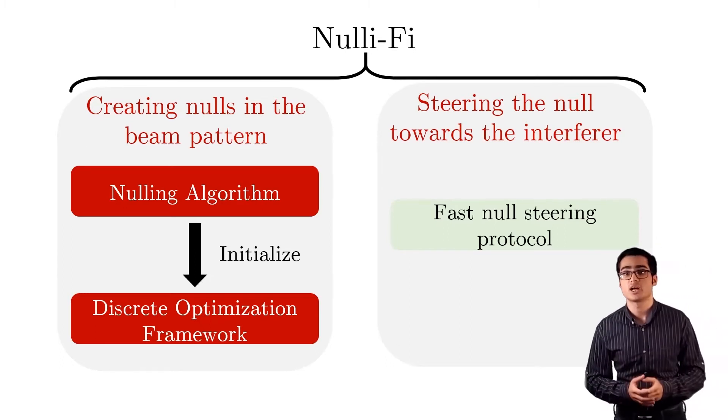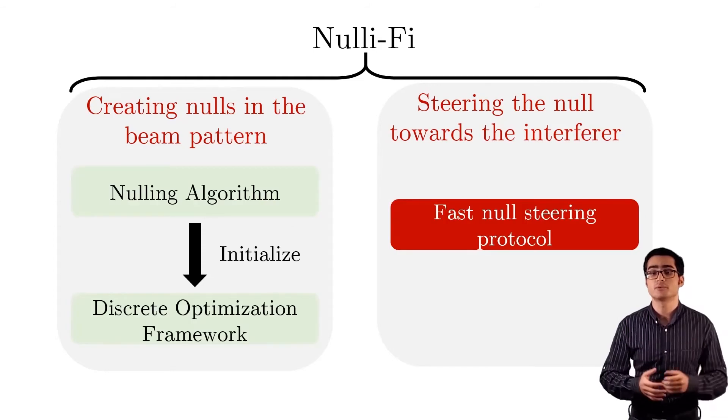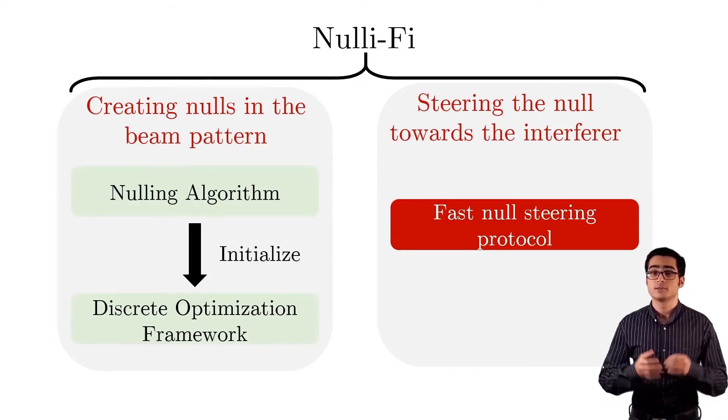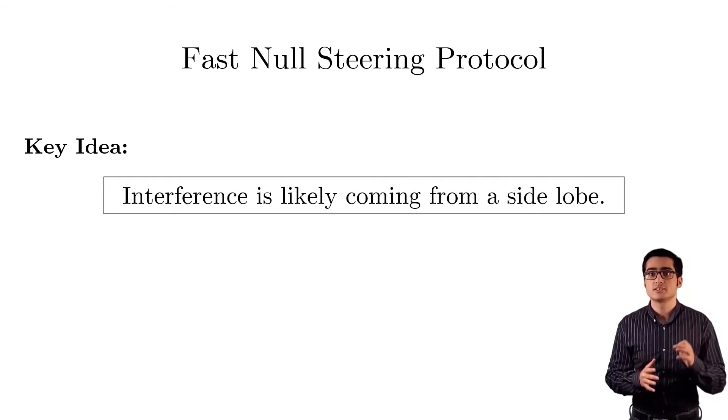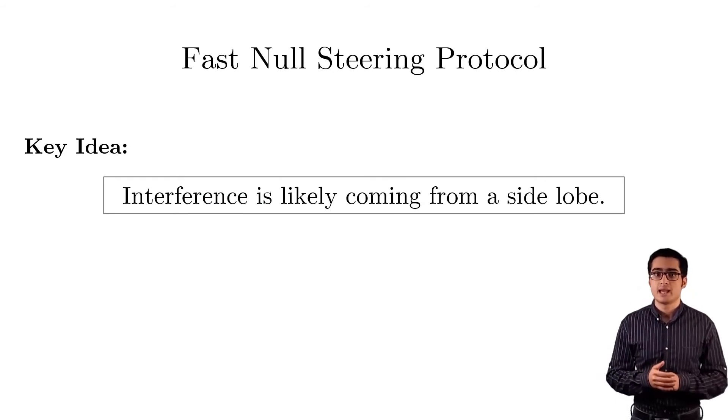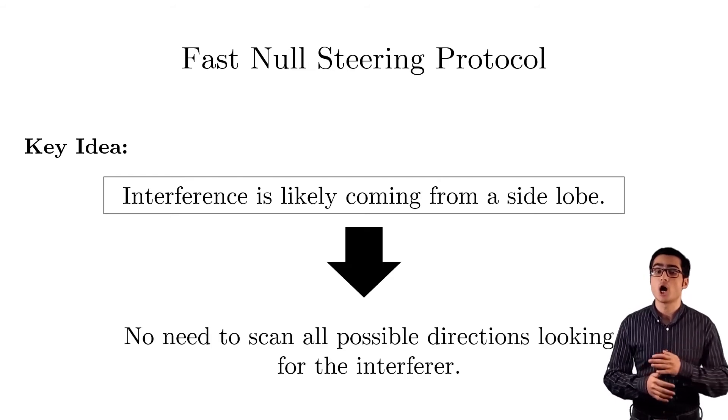Instead, in the remaining time, I will go over the fast null steering protocol. The protocol is based on the following insight. An interference is likely to come from a side lobe, and hence there is no need to scan all directions looking for interference. We simply need to check for the side lobes.